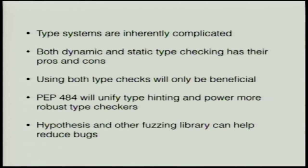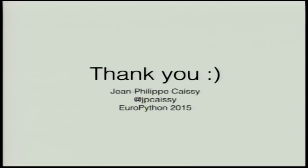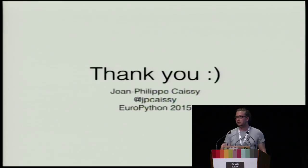In conclusion, type systems are inherently complicated, but it's interesting to know how they work. Both dynamic and static type checking have their pros and cons, but having both living in a type system can really help developers. PEP 484 is going to unify type hinting and give more power to develop type checkers in Python. And lastly, Hypothesis and other fuzzing libraries can help you reduce and find bugs early in your development cycle. Thank you.